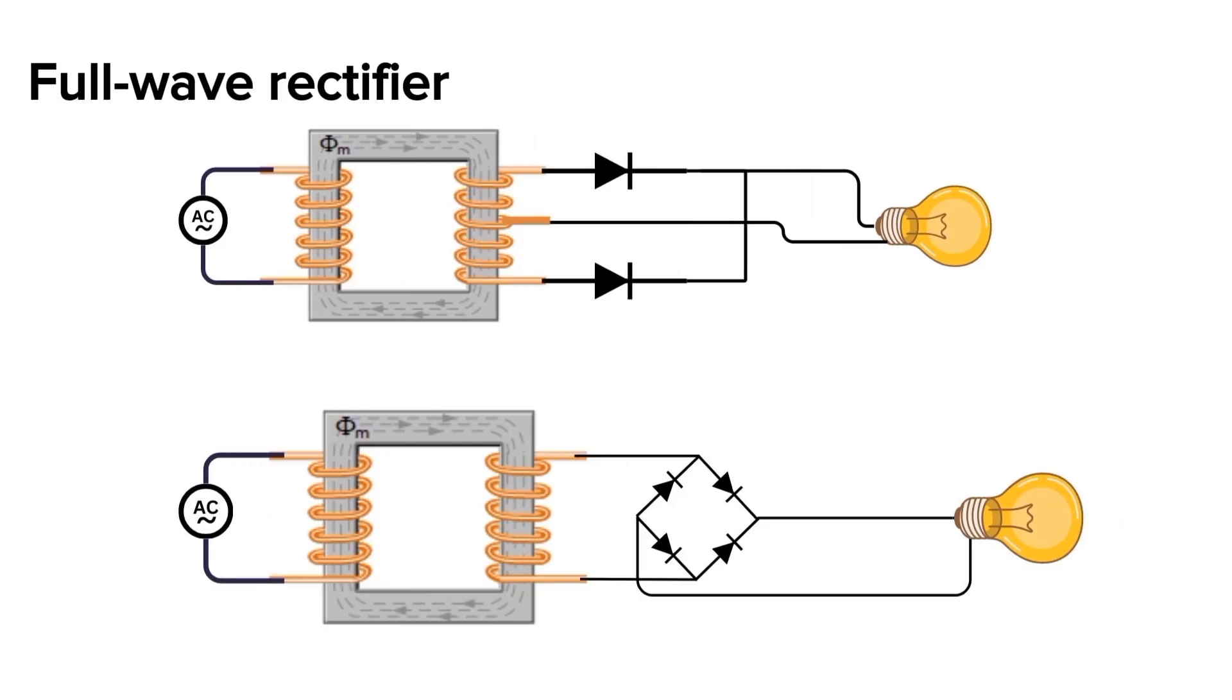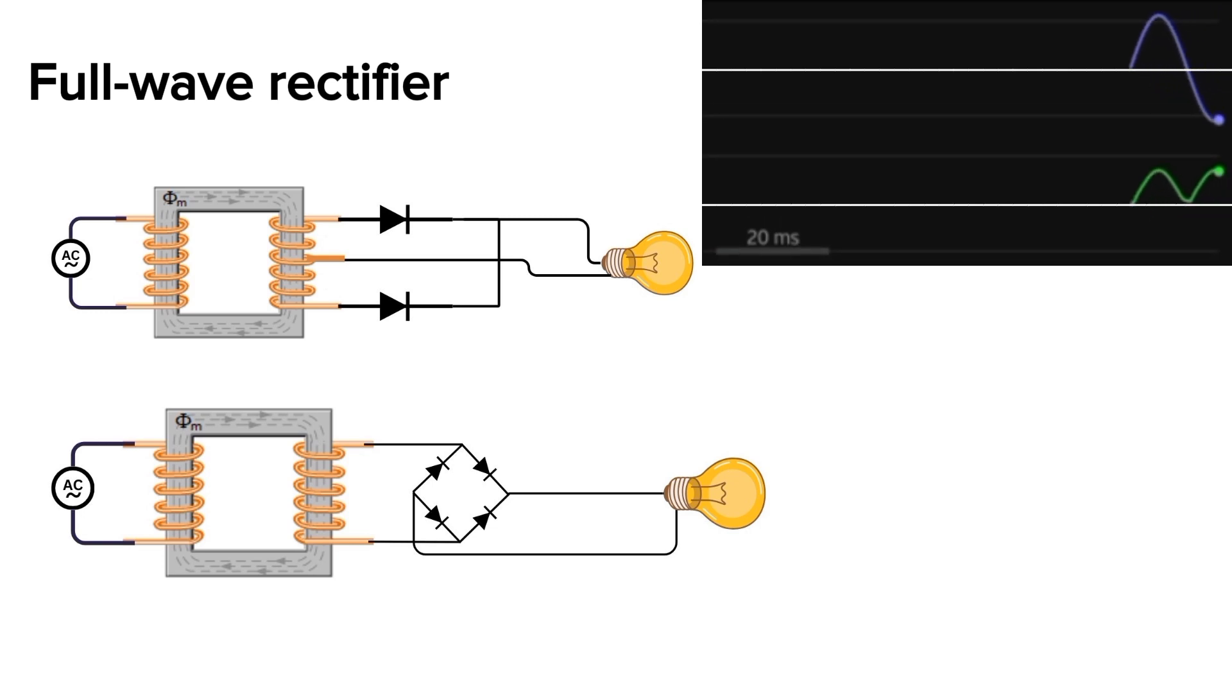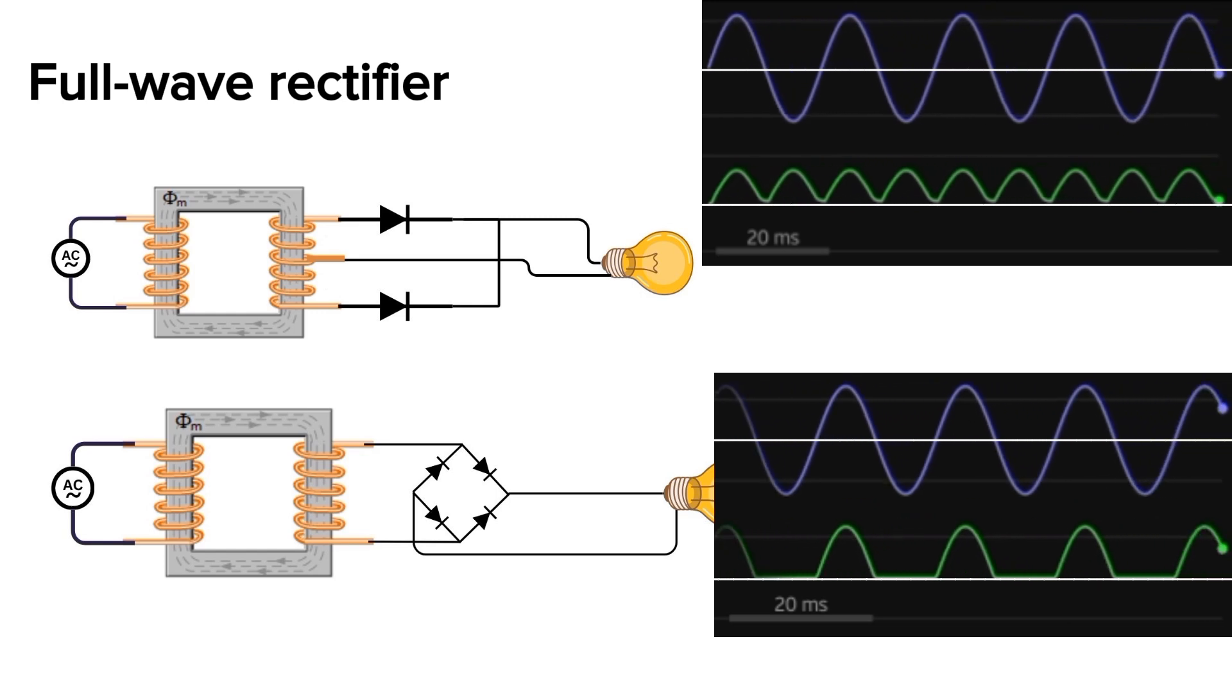Next, the full-wave rectifier circuit. There are two types: the two-diode circuit and the four-diode bridge circuit. Unlike the half-wave rectifier, the full-wave rectifier rectifies both the positive and negative halves of the AC sine wave. This results in a smoother output compared to the pulsating waveform of the half-wave rectifier.